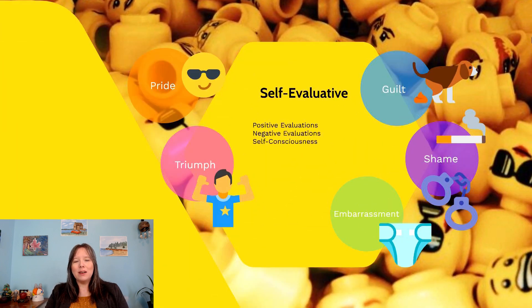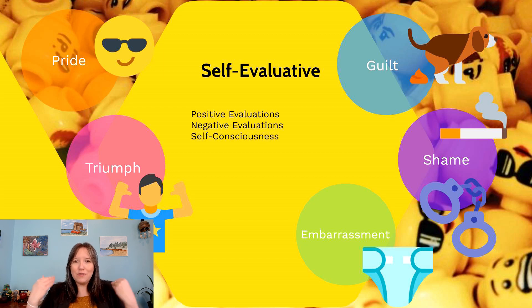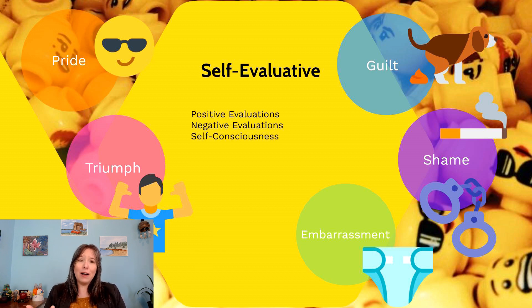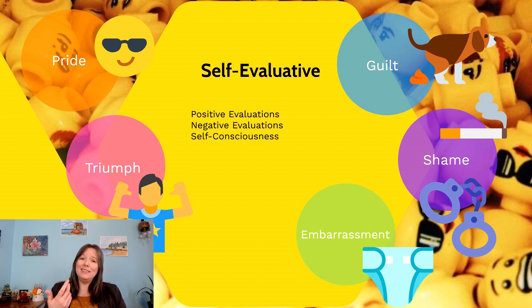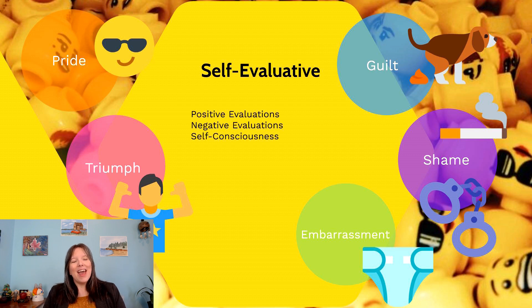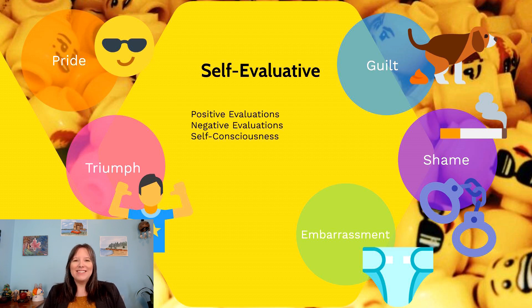Beyond other-evaluative emotions, we also experience self-evaluative emotions. To evaluate yourself, you need a good sense of self, so we start to see these again in the toddler and preschool years. We can have positive self-evaluations, such as pride. Pride is an emotion we feel when we succeed or feel good about ourselves. There is even a facial expression tied to pride — a little smirk with the nose and chin tilting up, head held slightly higher.